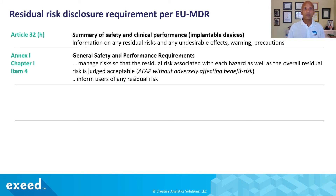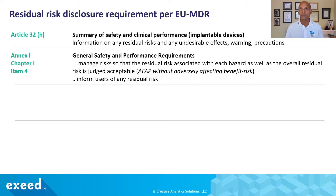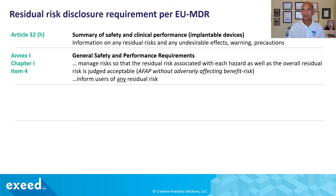In Annex 1, Chapter 1, item 4 — the general safety and performance requirements — they require you to manage risks so that the residual risks associated with each hazard as well as the overall residual risk are just acceptable, as far as possible without adversely affecting benefit-risk. And they say to inform users of any residual risk — not just the significant residual risks, but any.